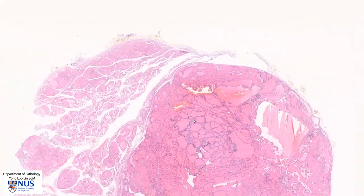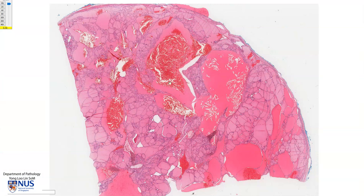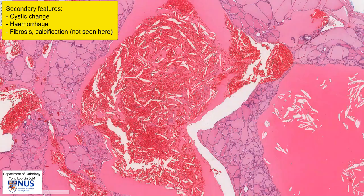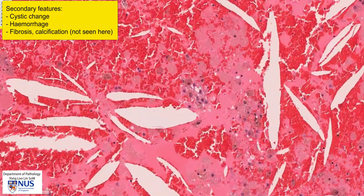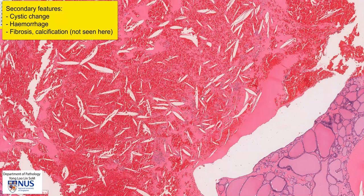There may also be secondary changes, and for this I'm going to show you another example. Here is another example of a multinodular goiter, and this time we can also see these vague nodular formations. In this area there is cystic change, and there is also hemorrhage — we can see a lot of blood here. If we zoom in, we can see these hemosiderin-containing macrophages, which are brownish in the cytoplasm, also known as hemosiderophages. They are evidence of previous hemorrhage. In addition, we can also see these cleft-like empty spaces, which were once occupied by cholesterol crystals — so we call these cholesterol clefts, and they are often also seen accompanying cystic change.